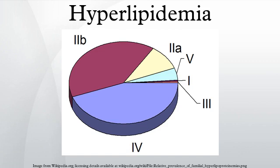Hyperlipidemias are divided into primary and secondary subtypes. Primary hyperlipidemia is usually due to genetic causes, while secondary hyperlipidemia arises due to other underlying causes such as diabetes. Lipid and lipoprotein abnormalities are common in the general population, and are regarded as a modifiable risk factor for cardiovascular disease due to their influence on atherosclerosis. Some forms may predispose to acute pancreatitis.